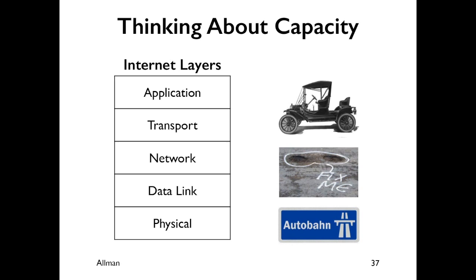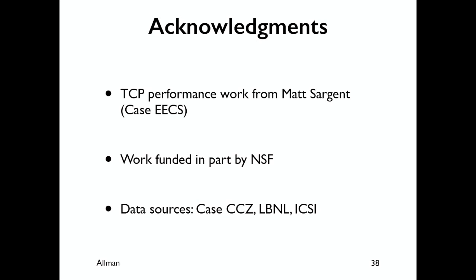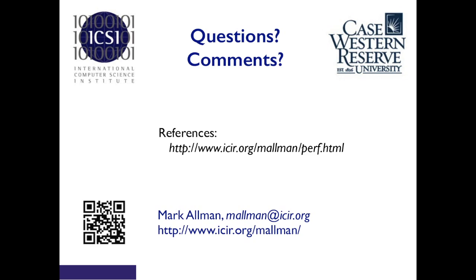That's sort of what I have. It's not just about layer one — we have to build fast networks, but we have to pay attention to a lot of stuff on top of that as well. A lot of this work comes from Matt Sargent, an EECS PhD student who's almost done. He can probably answer questions better than I can. There are references available for everything we've put out about all this. Thank you.